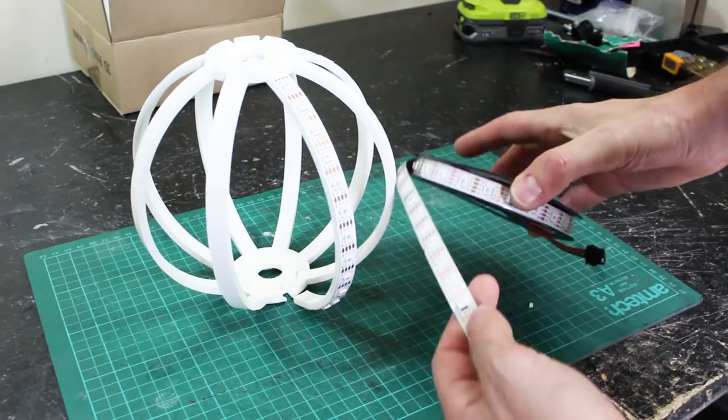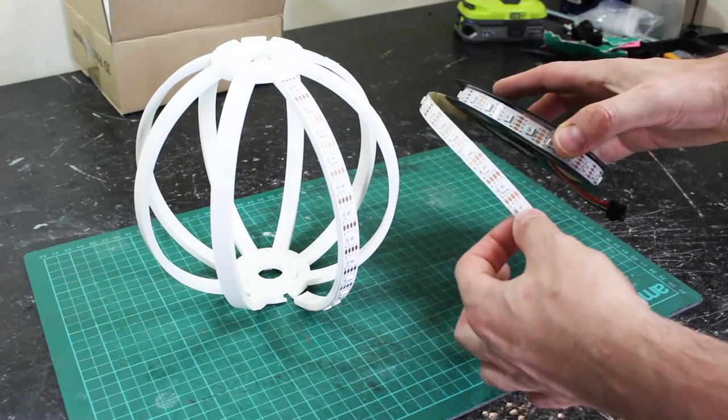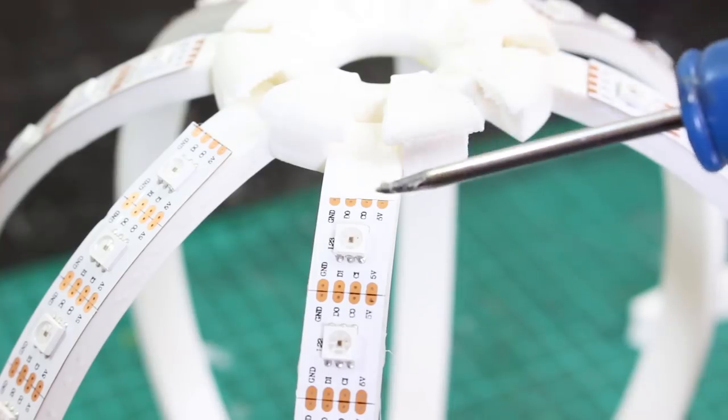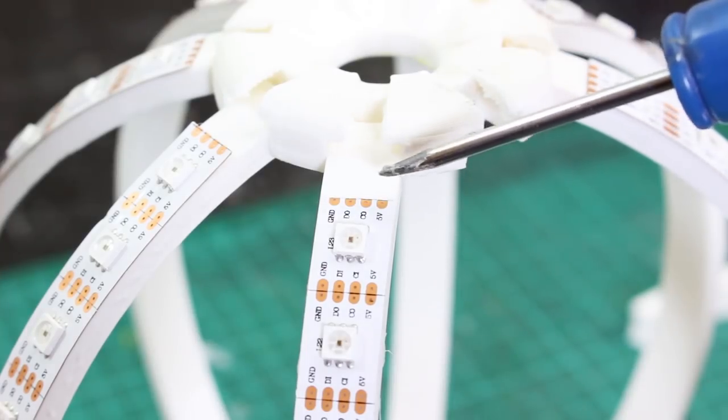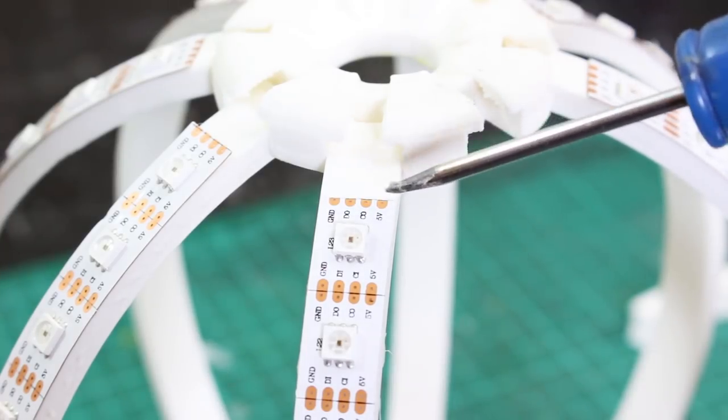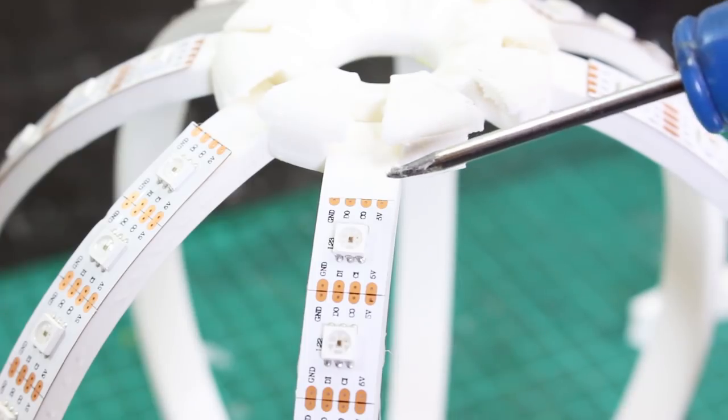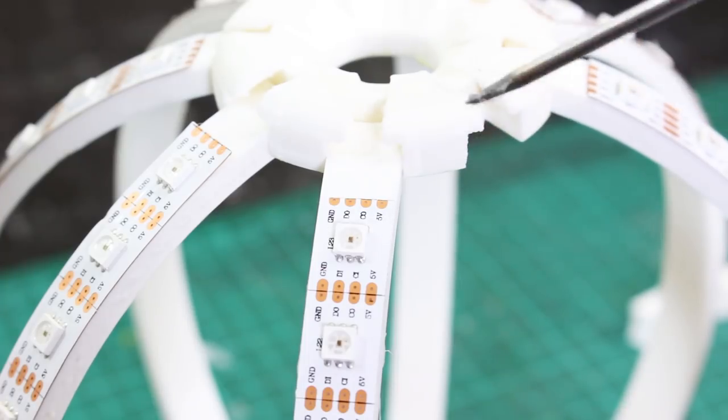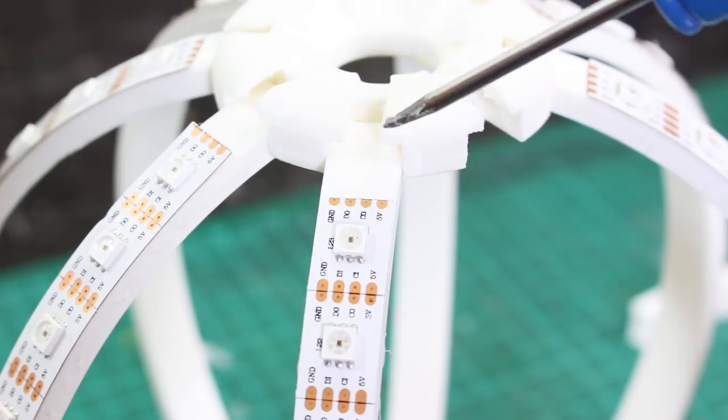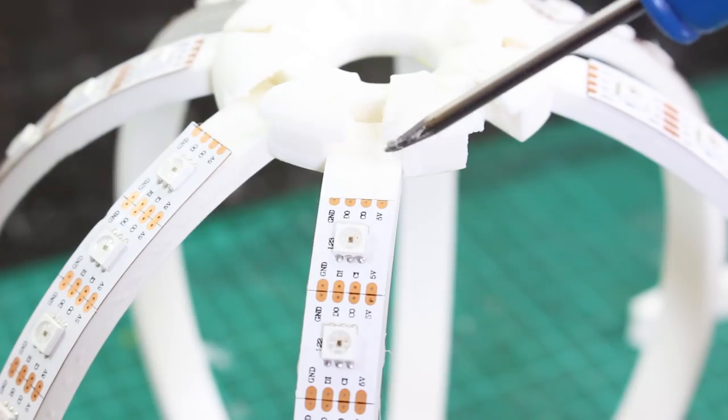And I've got this big strip here of APA 102s, which are dot star LEDs. So as you can see, there are four contacts on these LED strips. So unlike NeoPixels that just have grounds and five volts and the data, these have a clock and a data. And that means they don't use interrupts on the Arduino so we can use other devices that do use interrupts like servos at the same time without the interrupt conflict causing any issues.